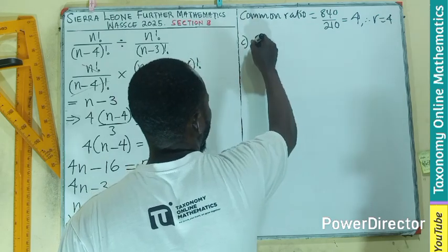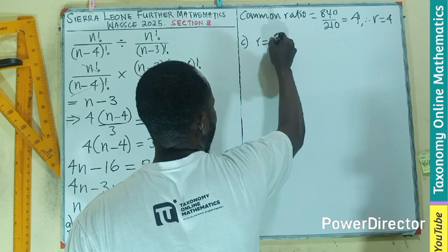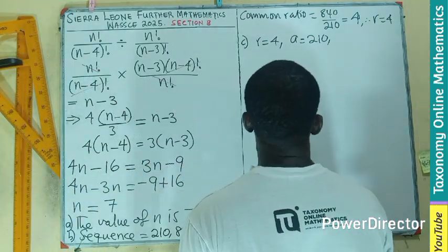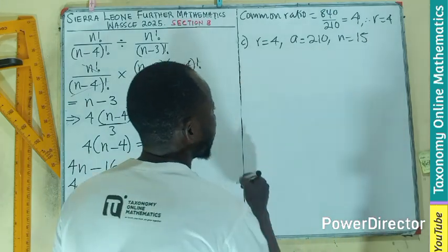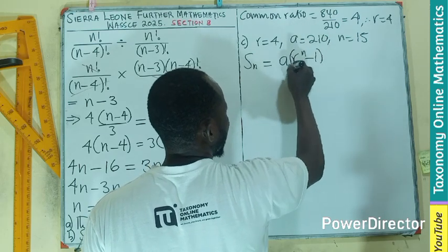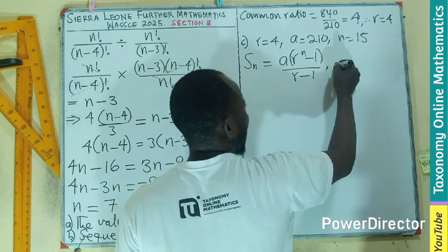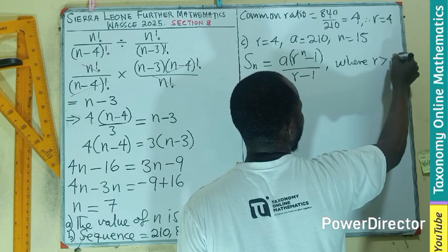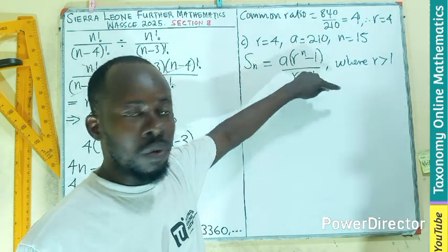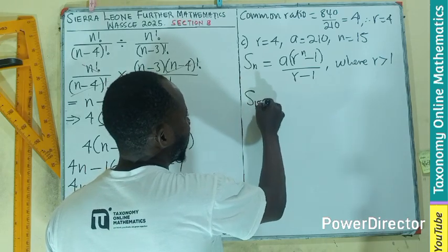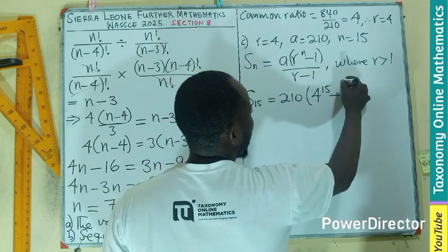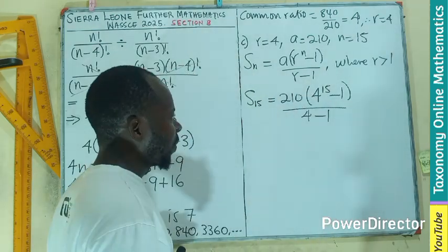Now we need to find the sum. You are looking for the sum of the first n terms. So we have our r to be 4. The first term also is 210 from the sequence. We need the n, which is 15. So by formula, S_n should be equal to a times r to the power n minus 1 divided by r minus 1, where we have our r more than 1. If it is less than 1, then 1 comes first before this. By substitution, I should be having S_15 equals 210 times 4 to the power of 15 minus 1 divided by 4 minus 1.